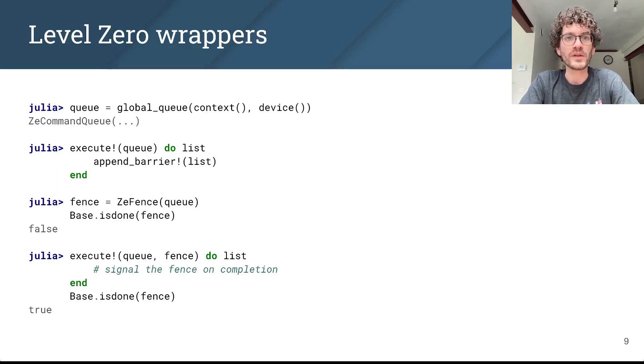Whenever possible, we try to raise the abstraction level a bit without sacrificing flexibility. For example, we provide global instances of common objects so you don't have to instantiate your own queue. We use idiomatic syntax like the do block here. And we also integrate with existing Julia interfaces to provide a familiar experience to Julia programmers.